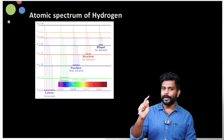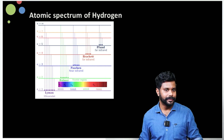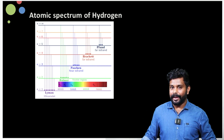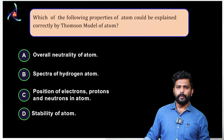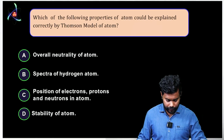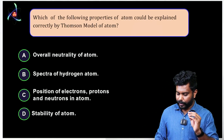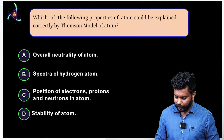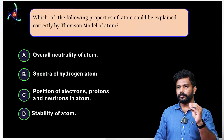The remaining parts of the atomic model will be discussed in the next session. Now we will do some questions regarding this part — they are very easy. The first question is: which of the following properties of the atom could be explained correctly by the Thomson model?